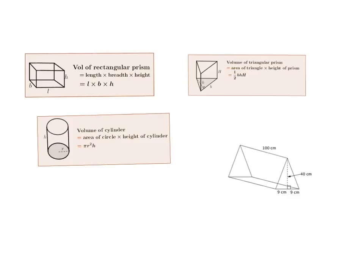The specific formulae we deal with this year: for a rectangular prism it's length times breadth multiplied by the height. For a cylinder it's pi r squared multiplied by the height. For a triangular prism it's the area of the triangle multiplied by the height. There are two different heights here — the height of the actual triangle, and the height of the prism itself. We use a capital H for the height of the prism.